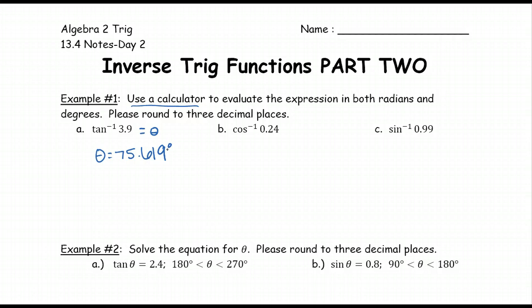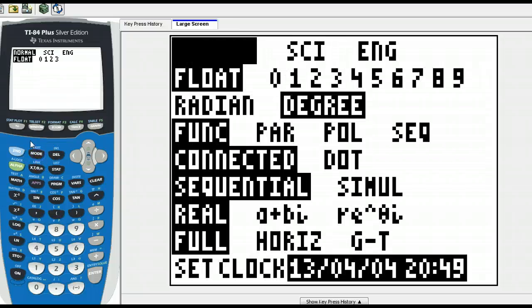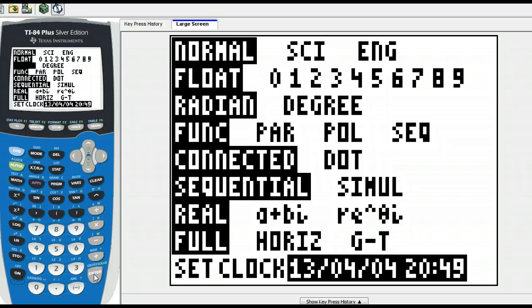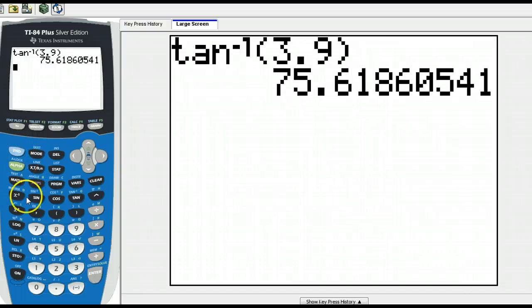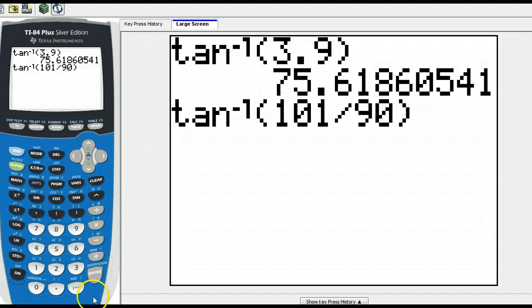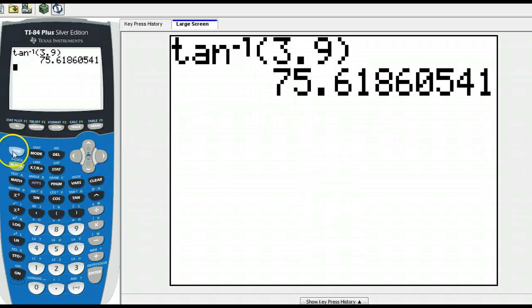Then we have to find it in radians. We go back to our calculator. Now to find it in radians we just need to go back to our mode and make sure we're in radian mode so our calculator can give us a radian answer. I don't know if anybody's ever taught you this before but I love the entry button. If you hit second entry it pulls up the last thing that you typed in your calculator.